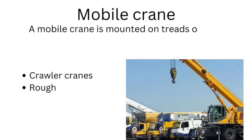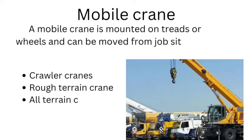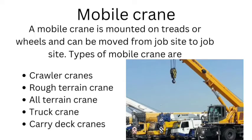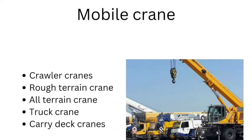Mobile crane. A mobile crane is mounted on treads or wheels and can be moved from job site to job site. Types of mobile cranes are: crawler cranes, rough terrain crane, all terrain crane, truck crane, and carry deck cranes.